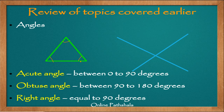We have three angles because this segment and this segment meet at a point — and that point is known as a vertex. Wherever there is a vertex, there is an angle. Similarly, this segment and this segment meet at another vertex and form an angle. Let us call these angle A, angle B, and angle C — so we have three angles in the triangle.